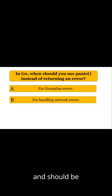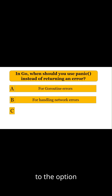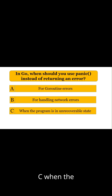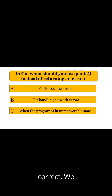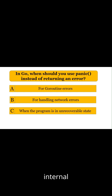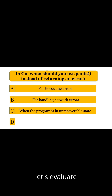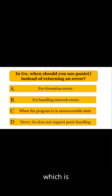Now let's move to Option C: when the program is in an unrecoverable state. That's perfectly correct. We should use panic only when something should never happen, like violating internal assumptions or corrupting program state. So Option C is the correct answer.